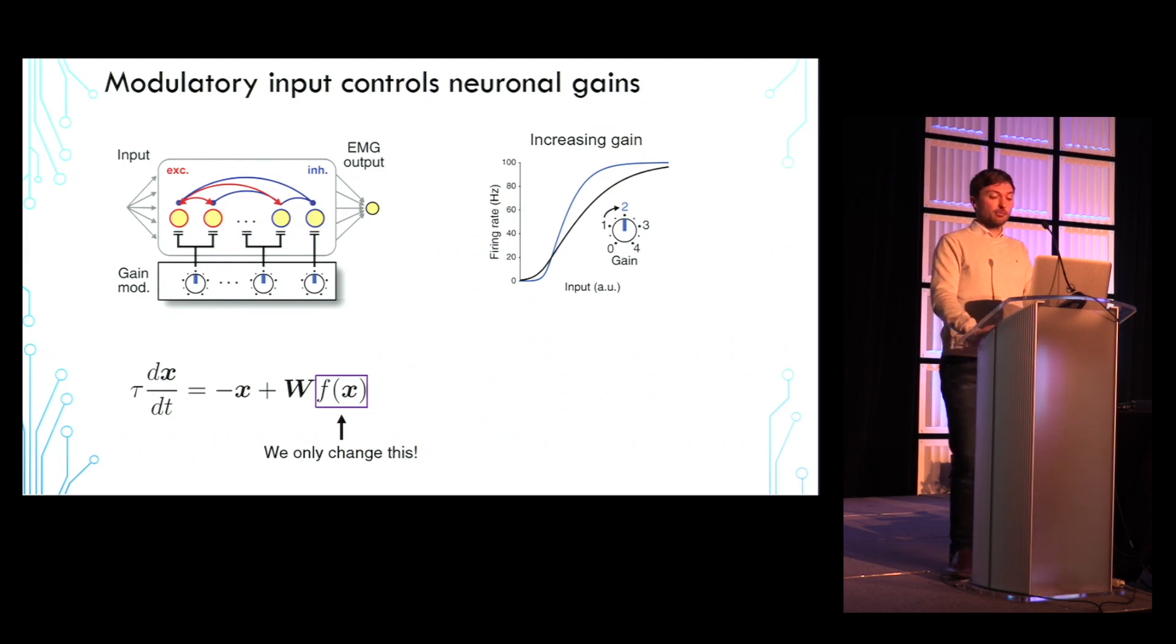To give you an idea of how gain modulation affects the neuronal dynamics, we find that uniformly increasing the gain of all neurons in the recurrent network causes an approximate doubling in the frequency of the neuronal dynamics, as well as an increased overall amplitude, as shown here for three example neurons on the bottom.